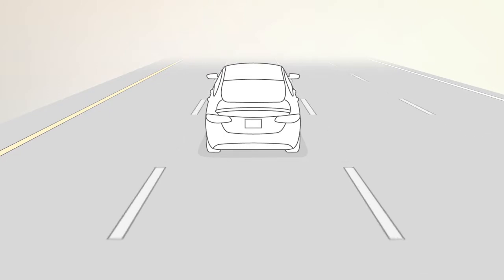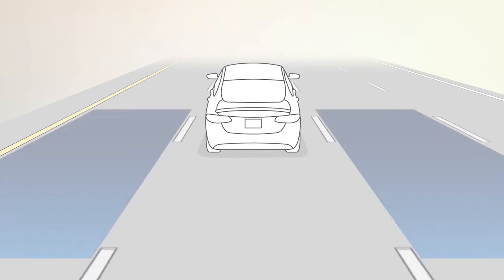The BSM detection zone covers about one lane on either side of you. The zone starts on the side and extends back toward the rear. The system activates at speeds above 19 mph or 30 km per hour.